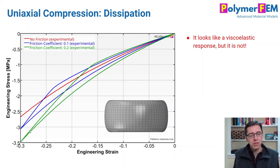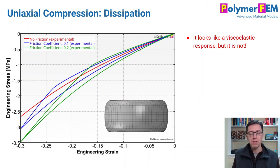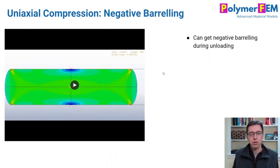But once we start unloading, we see that the response follows a different curve. That's because the material sticks to the top and bottom surfaces. So we do see hysteresis during cyclic loading when we have friction, even though in this particular simulation this is a hyperelastic Neo-Hookean material — there is no dissipative energy. All of this is purely due to the frictional interface effect. So just because you see hysteresis in your stress-strain curve experimentally does not prove that you have a viscous material. There is apparent viscous dissipation, but it could be due to friction.